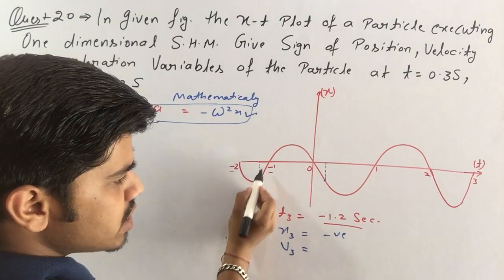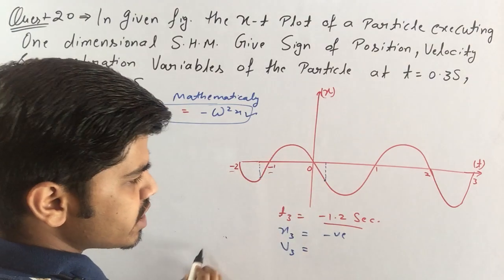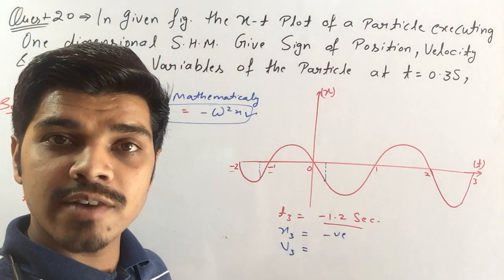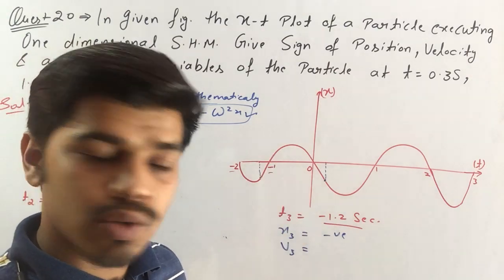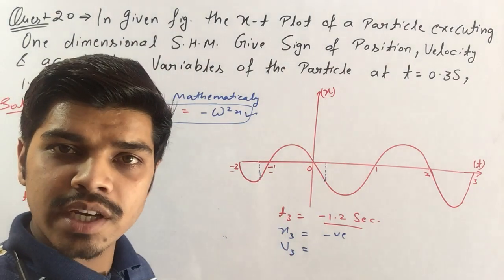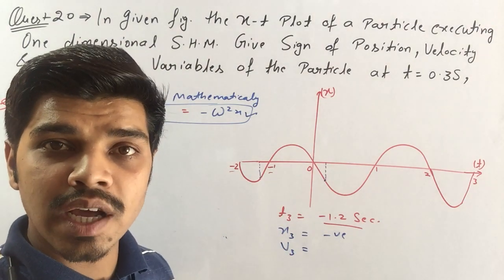Small change in x, small change in time. So velocity is what in position time graph? Small change in position with respect to small change in time. Position time graph slope is velocity.